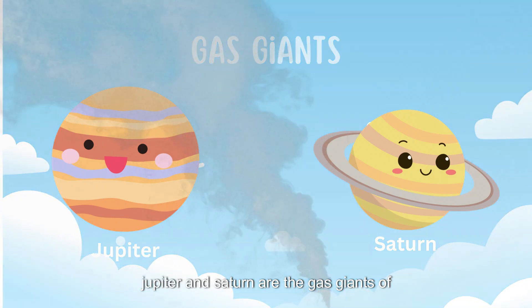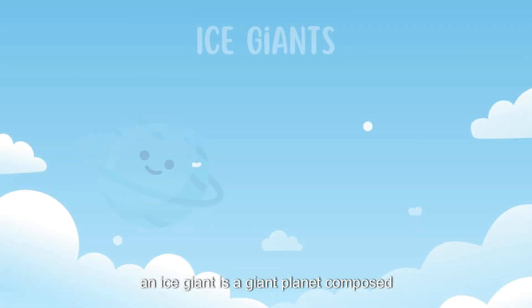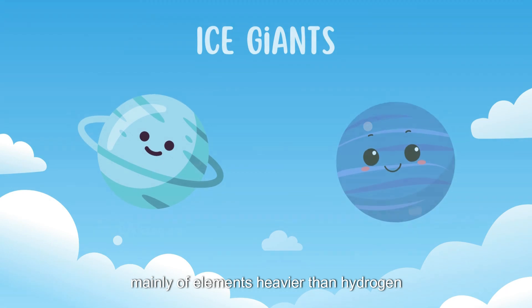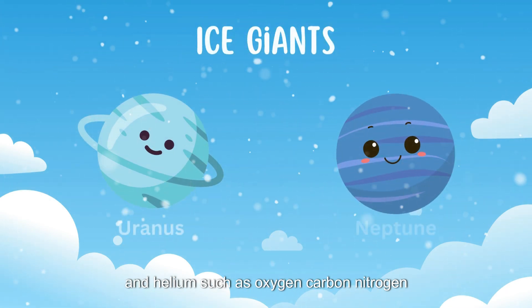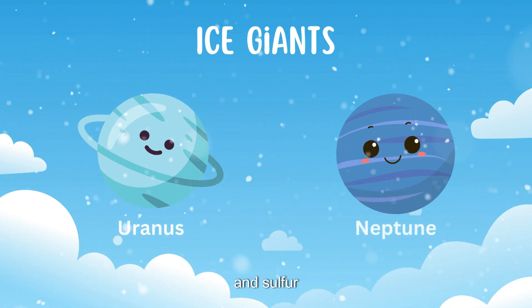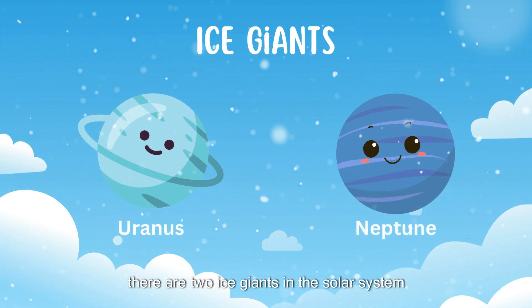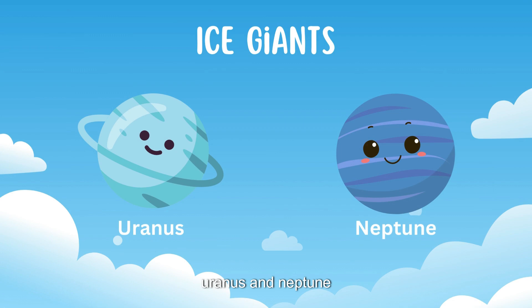Jupiter and Saturn are the gas giants of the solar system. An ice giant is a giant planet composed mainly of elements heavier than hydrogen and helium, such as oxygen, carbon, nitrogen and sulfur. There are two ice giants in the solar system, Uranus and Neptune.